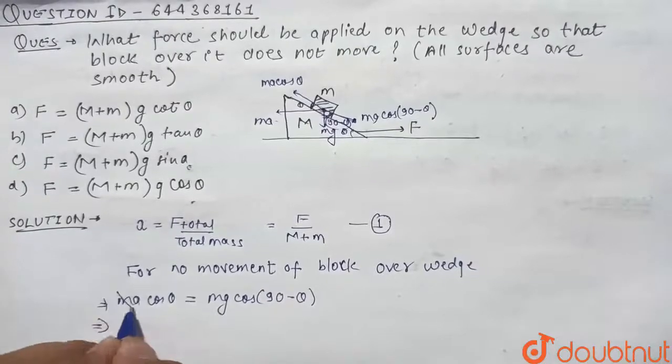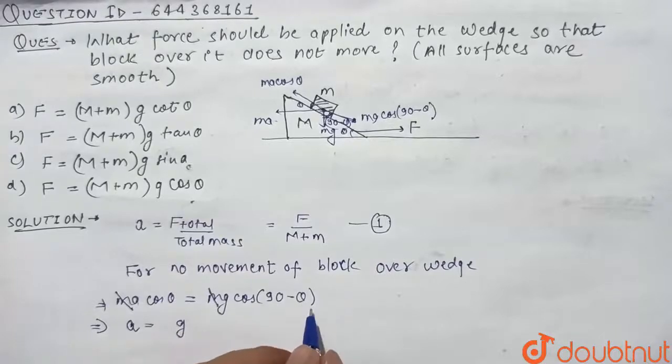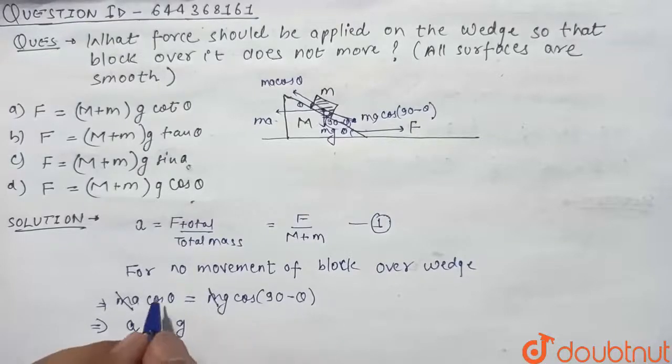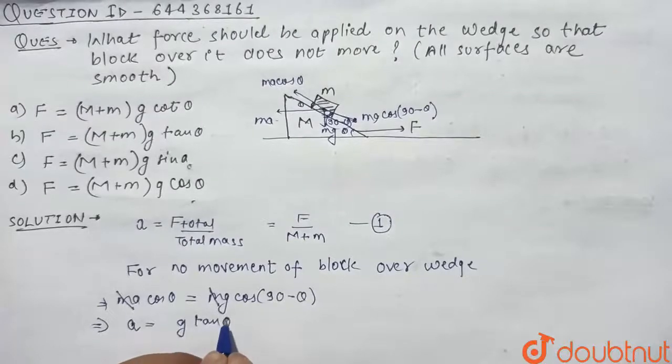Now here m and m will cancel, and acceleration comes out to be g tan theta, because cos 90 minus theta is sin theta, and sin theta by cos theta is tan theta. So this is g tan theta.